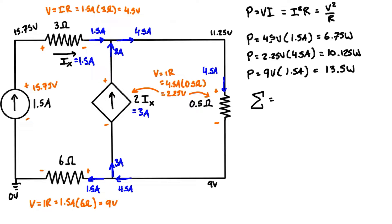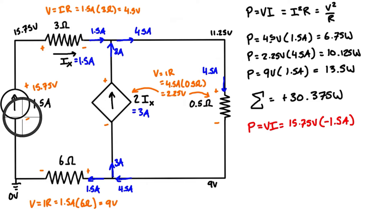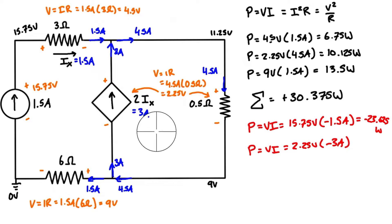The sum of all resistor dissipations is 30.375 watts. We can also check the power delivered by the two sources. For the 1.5-amp independent source: power equals 15.75 volts times negative 1.5 amps — negative because current flows into the negative terminal — giving negative 23.625 watts. For the dependent power source: power equals 2.25 volts times negative 3 amps, again because current enters the negative terminal, giving negative 6.75 watts.